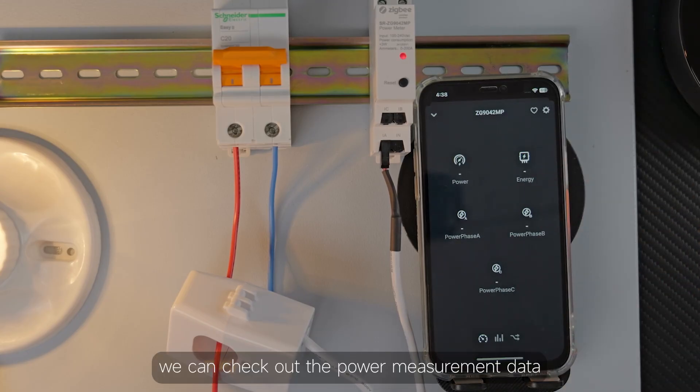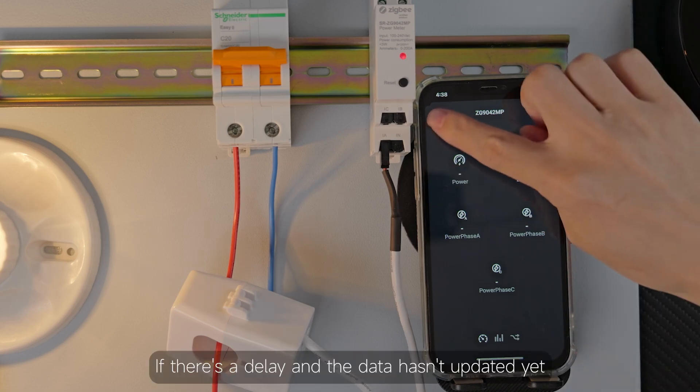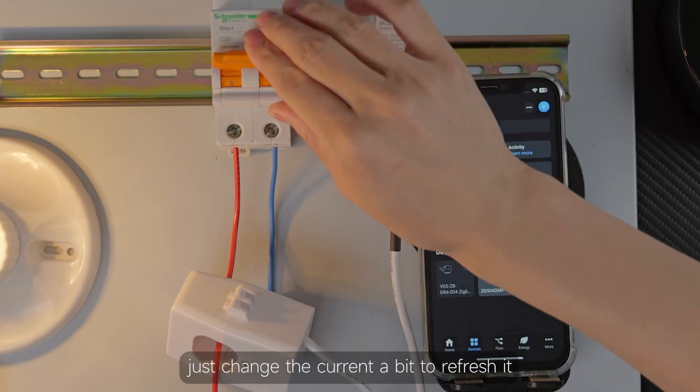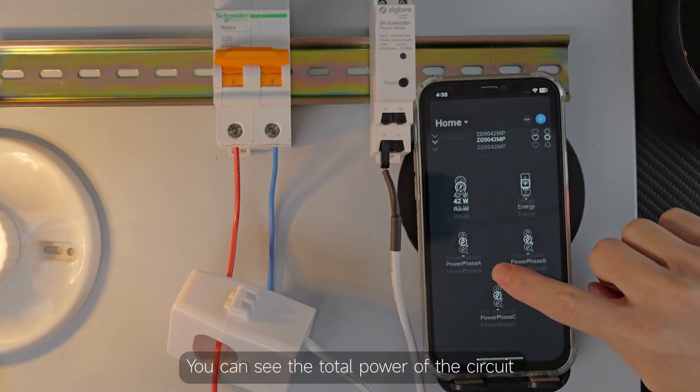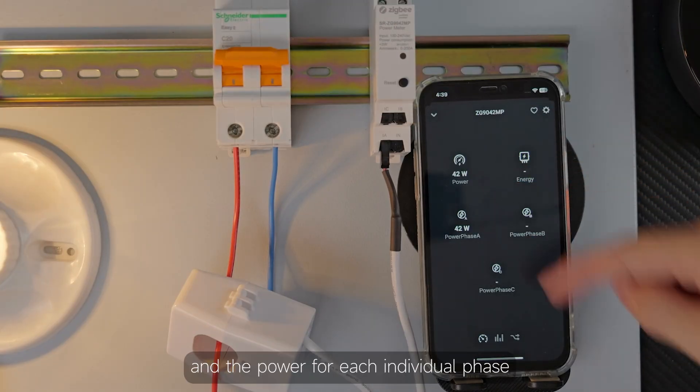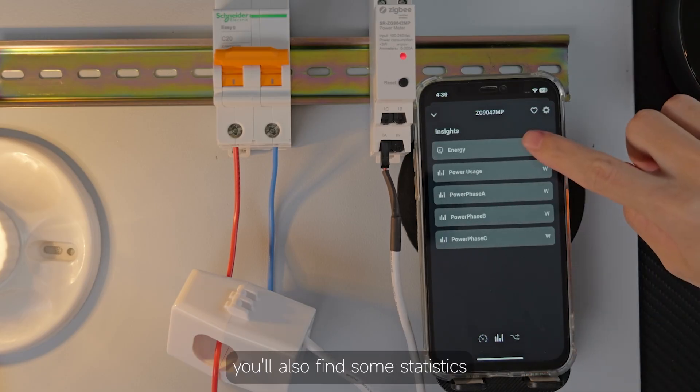Once that's done we can check out the power measurement data. If there's a delay and the data hasn't updated yet, just change the current a bit to refresh it. You can see the total power of the circuit and the power for each individual phase. On the Insights page you'll also find some statistics.